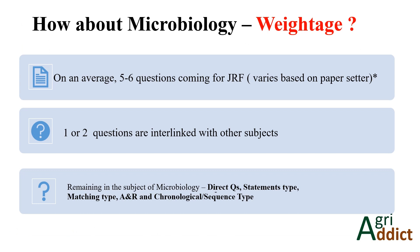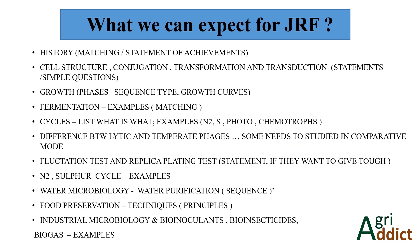Now we'll talk about the weightage. Looking at three previous year papers, on average five to six questions come from microbiology in the JRF exam, though this varies with the paper setter. In addition to these five to six questions, you can expect one or two more questions interlinked with other subjects, mainly genetics and plant pathology. From microbiology you can expect all ranges of question patterns — direct questions, statement-wise, matching types, assertion-reasoning, and chronological sequence types.